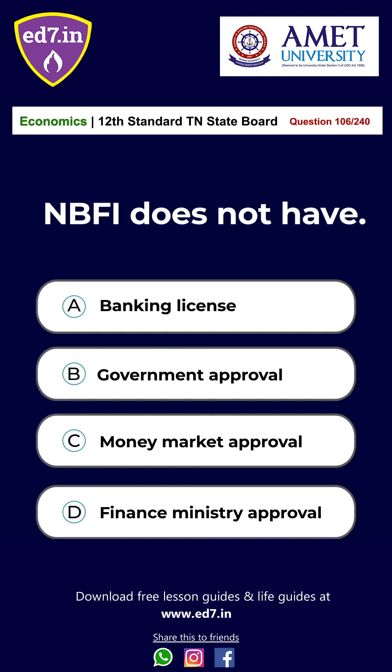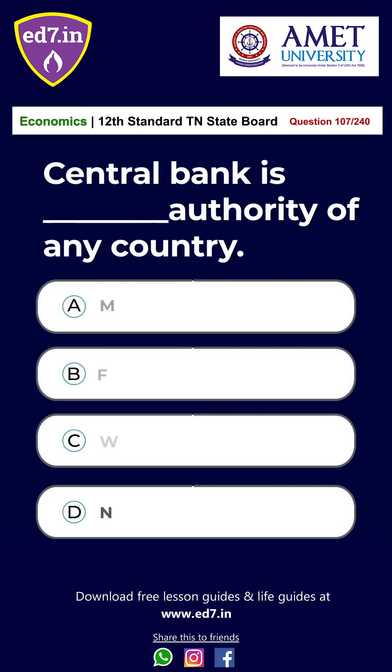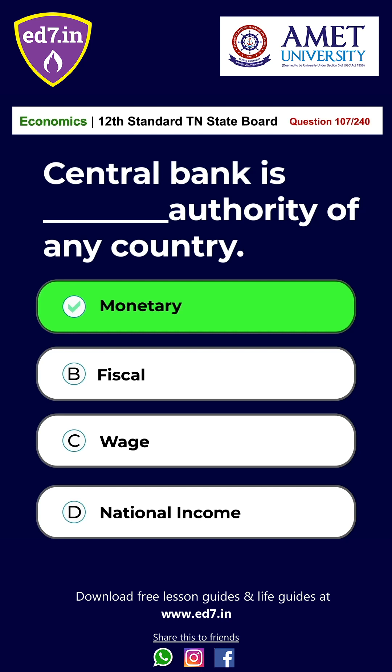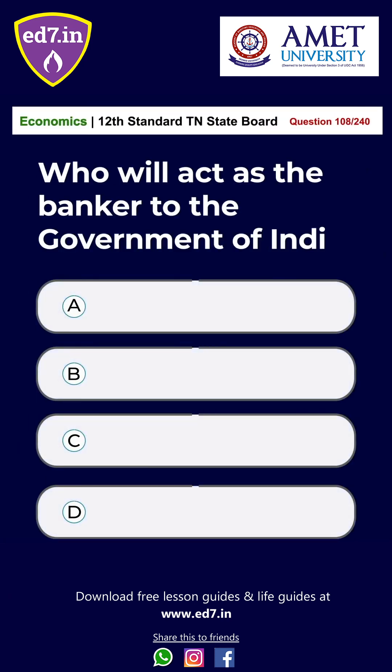Question number 106: NBFI does not have — (a) a banking license, (b) government approval, (c) money market approval, (d) finance ministry approval. The answer is option (a) a banking license. Question number 107: Central bank is the dash authority of any country — (a) monetary, (b) fiscal, (c) wage, (d) national income. The answer is option (a) monetary.